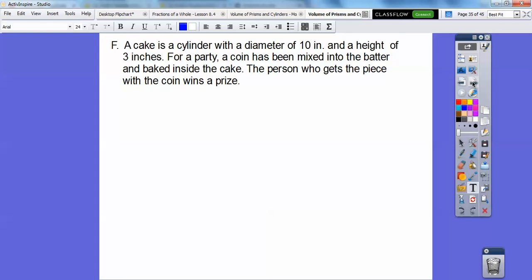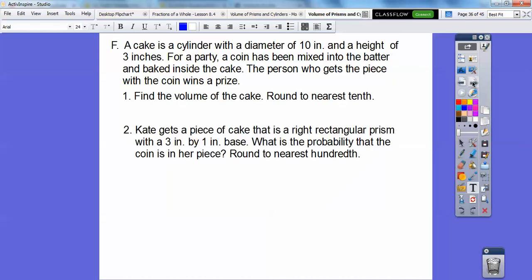So here, a cake is a cylinder with a diameter of 10 inches and a height of 3 inches. For a party, a coin has been mixed into the batter, a dirty old coin, and baked inside the cake. So the person who gets the coin wins a prize. Oh boy, a dirty old coin. So find the volume of the cake and round to the nearest tenth. So it's a cylinder, so base times height, and the diameter is 10, so the radius is 5, so πr² times the height of 3. So π times r² times the height. So if we plug all that in, 25π times 3 is 75π. That's the volume of the cake.